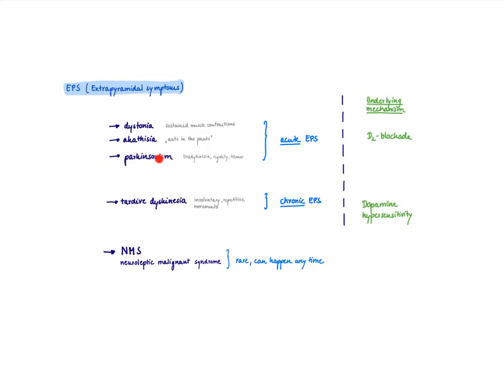And then parkinsonism. If you see -ism, this always means resembling a disease. So in that way, it's resembling Parkinson's. And this completely makes sense because we said before, we block dopamine receptors in the nigrostriatal pathway, which leads to these movement problems. And we have a disease, Parkinson's, which is characterized by the loss of dopaminergic neurons in the substantia nigra. So therefore, you're going to see very Parkinsonian-like symptoms, like bradykinesia, slow movements, rigidity, and tremor.